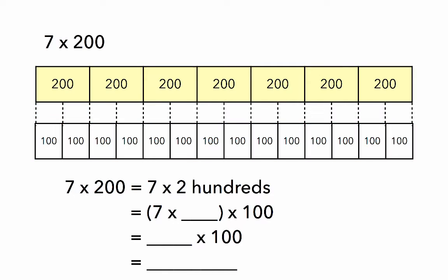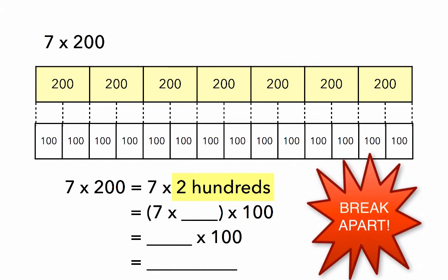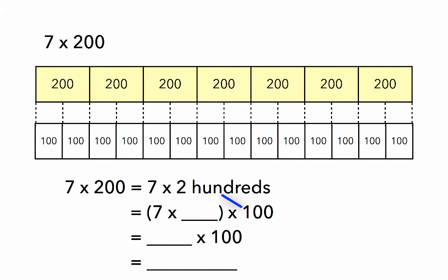Let's look at our equation. 7 times 200 is rewritten as 7 times 2 hundreds. Break it apart! How many times does 100 go into 200? Two times.